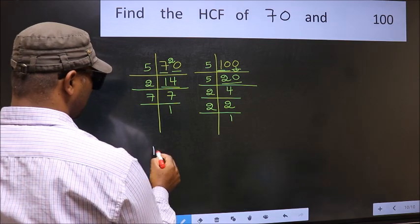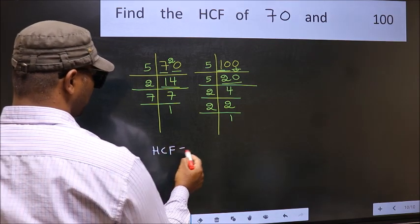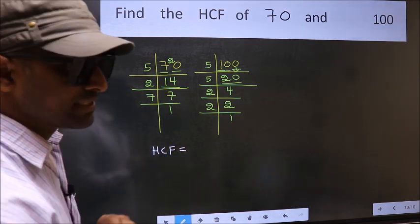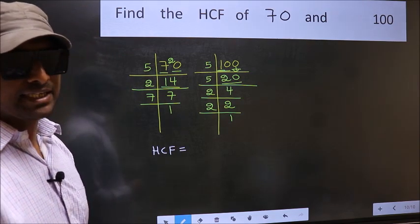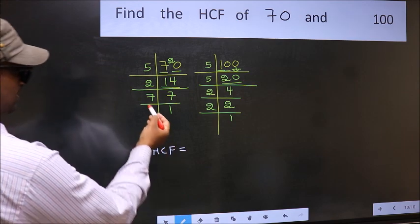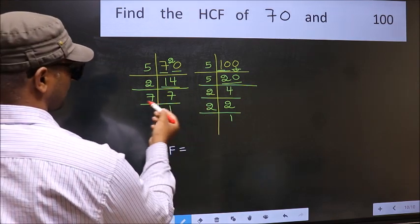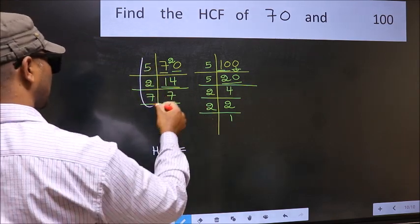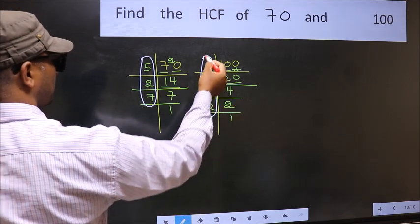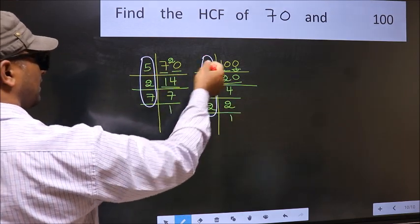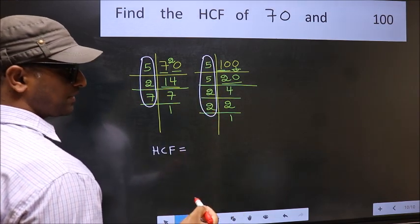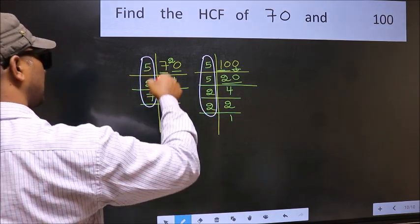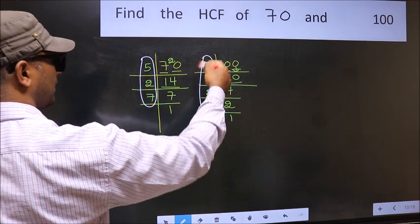Therefore, our HCF is the product of the numbers which should be present in these two places. That is here and also here. Here and here. So now let us find the numbers which should be present here and here.